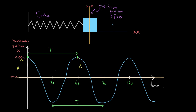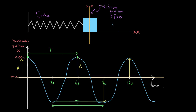So to recap: the amplitude of a simple harmonic oscillator is the maximum magnitude of displacement from the equilibrium position — you'll get the same value measuring either side. The period is the time it takes for an oscillator to complete one entire cycle, which you can find on a graph by measuring peak to peak, valley to valley, or from one equilibrium position — skipping the next — to the following equilibrium position.